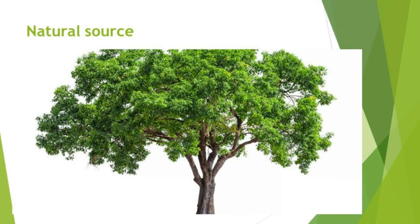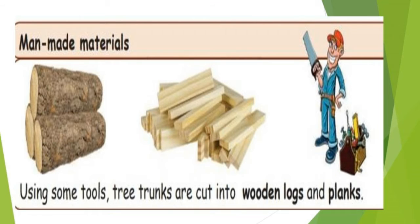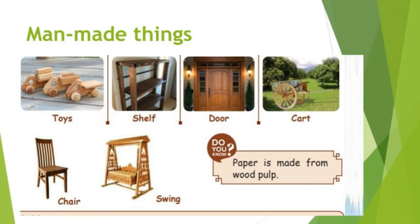Let's see one example. The tree is a natural source. Using tools, tree trunks are cut into wooden logs and planks — these are man-made materials. Using these planks, man makes many things, for example: toys, shelf, door, cart, chair, swing. These are called man-made things.